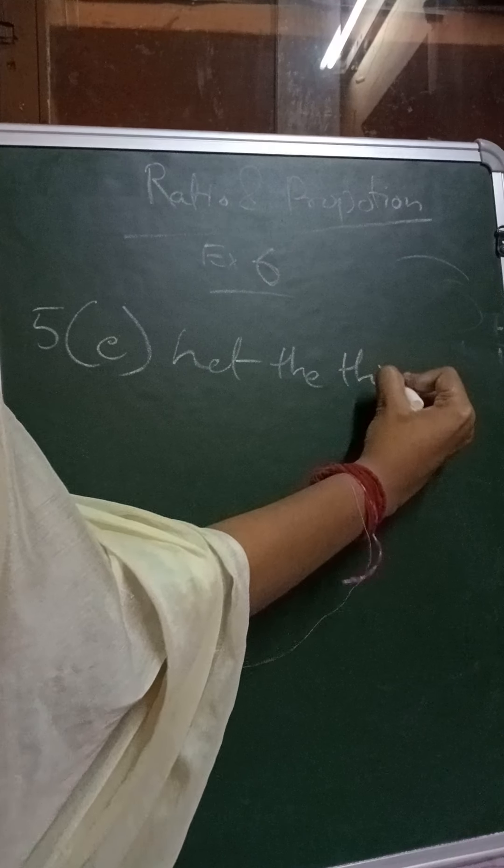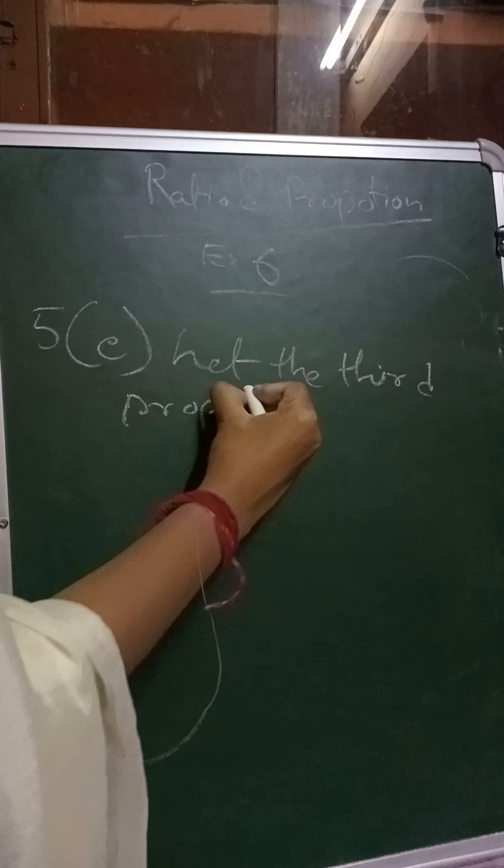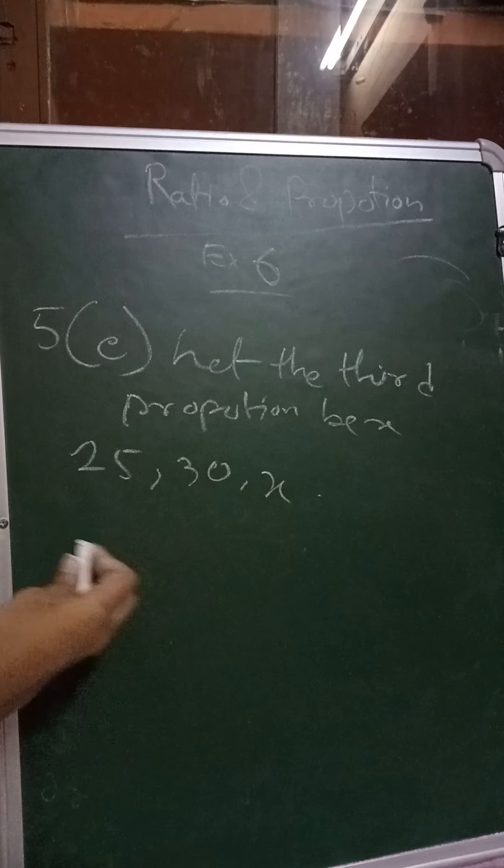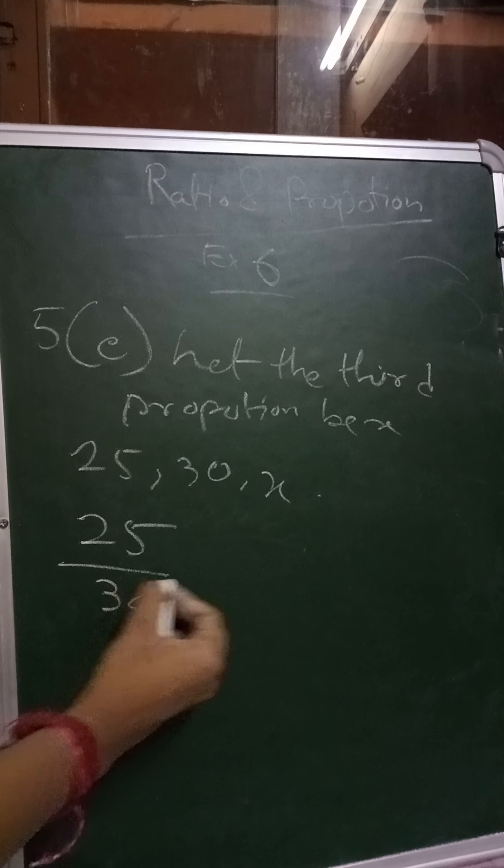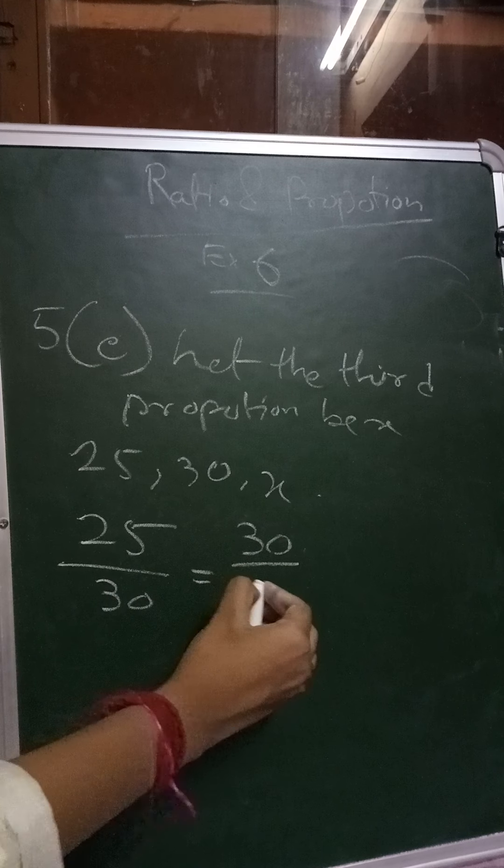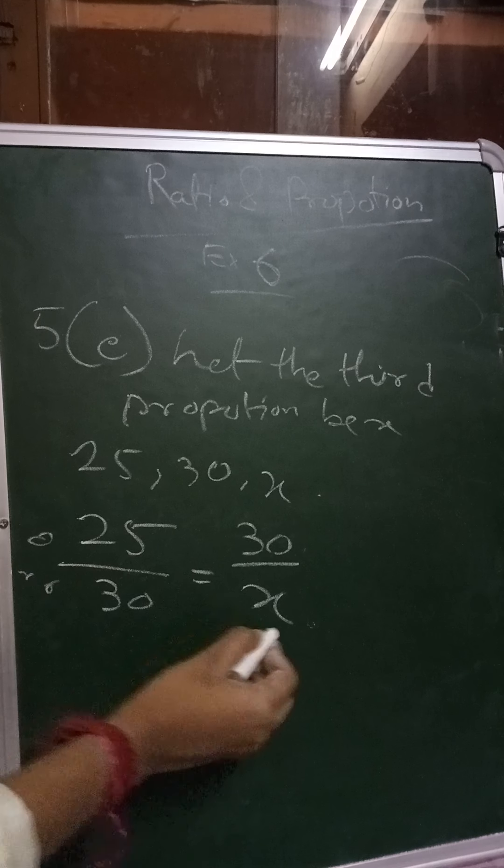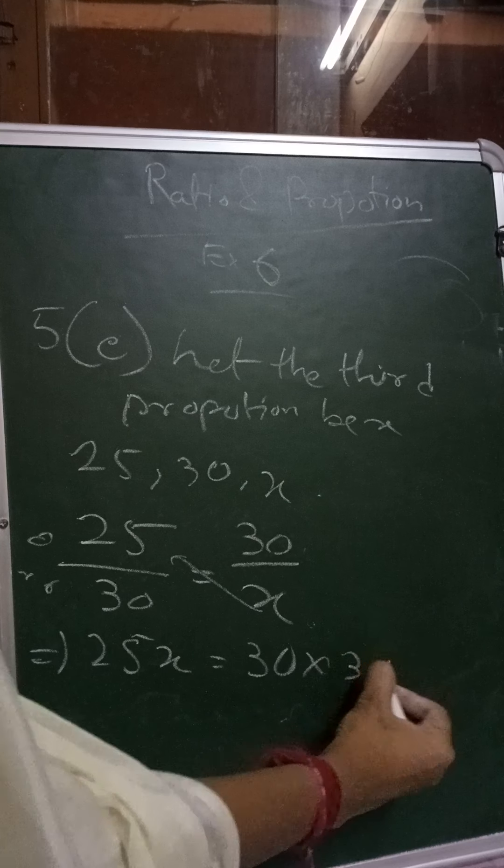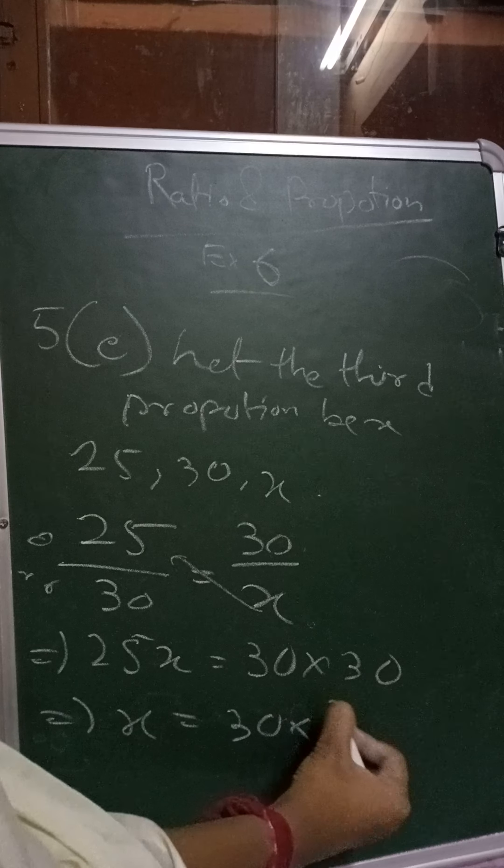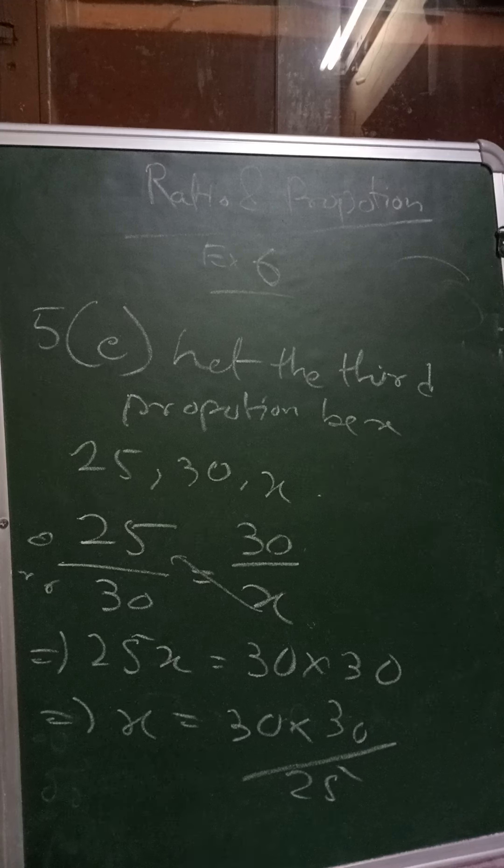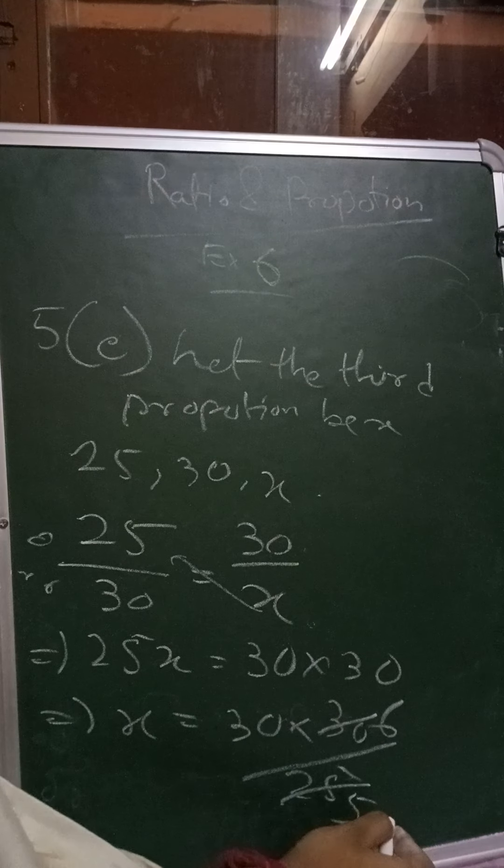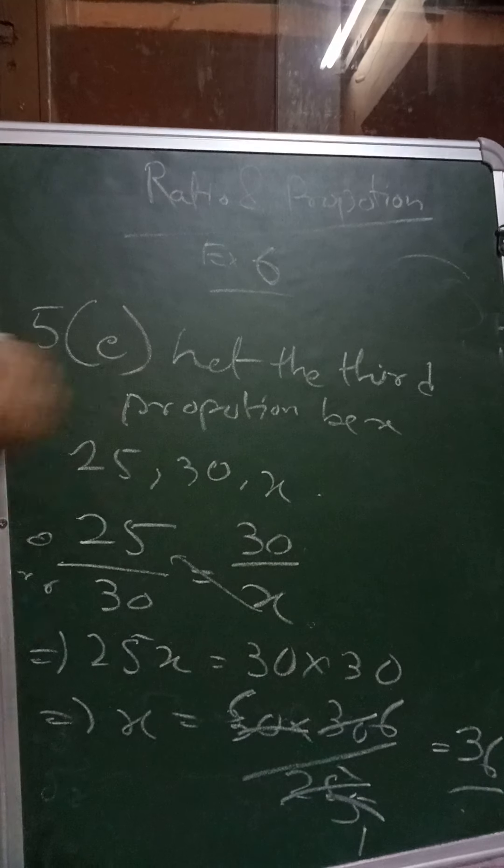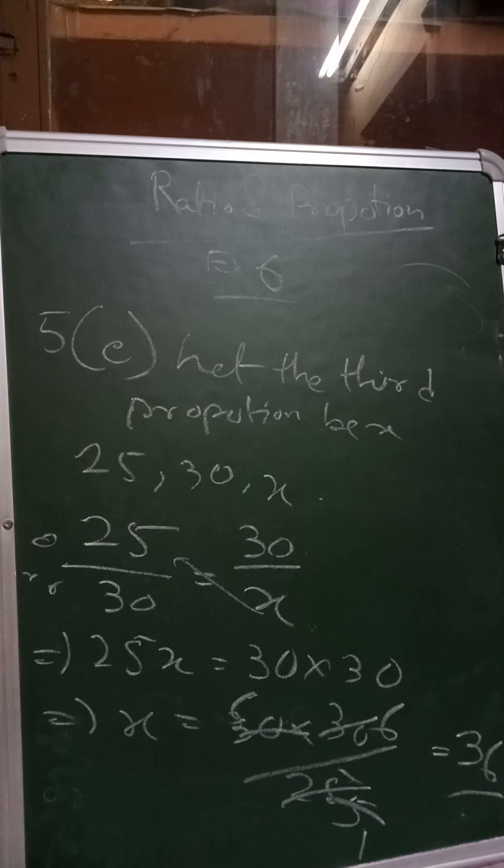So let the third proportion be x. We can write the proportion as 25, 30, x. So 25 by 30 is a continuous proportion. So the value of this and this will be same. So this x will go here, that is 25x equals 30 into 30. So the value of x will be 30 into 30 by 25. If I cut it with 5, this will be 5 and this will be 6. And if I again cut it, it will be 1, it will be 6. So the value is 6 into 6 that is 36. So here the value of the third proportional is 36.